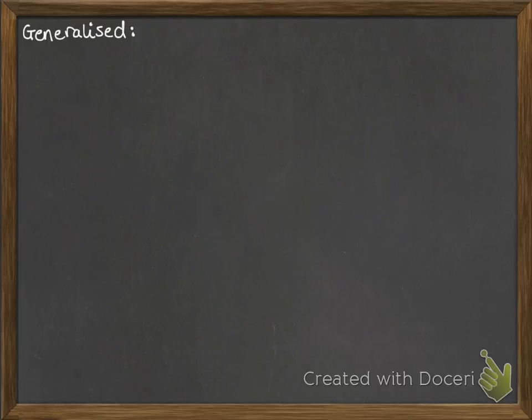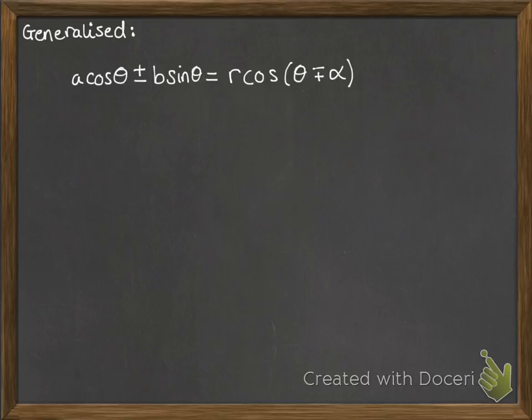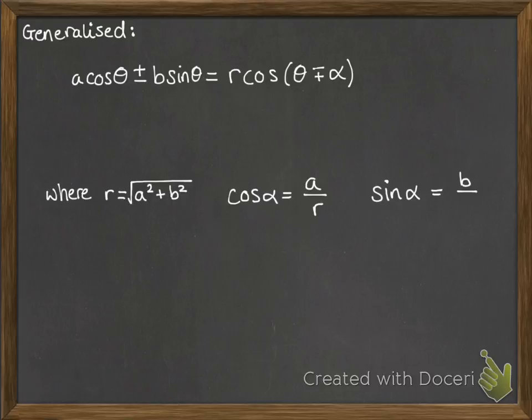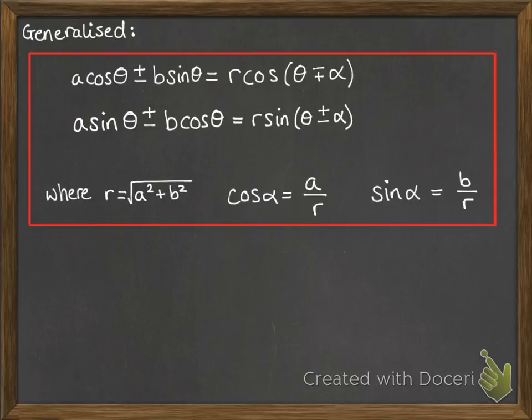Okay, so putting these results in a generalized form looks like this. So here's the one with the cos that we just did, along with the situations that make it possible. And here's the one for sine that we did first of all. So we put that all together as one result.